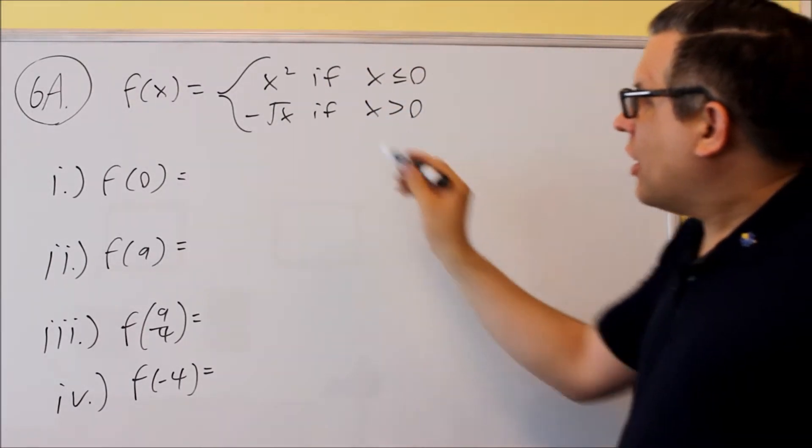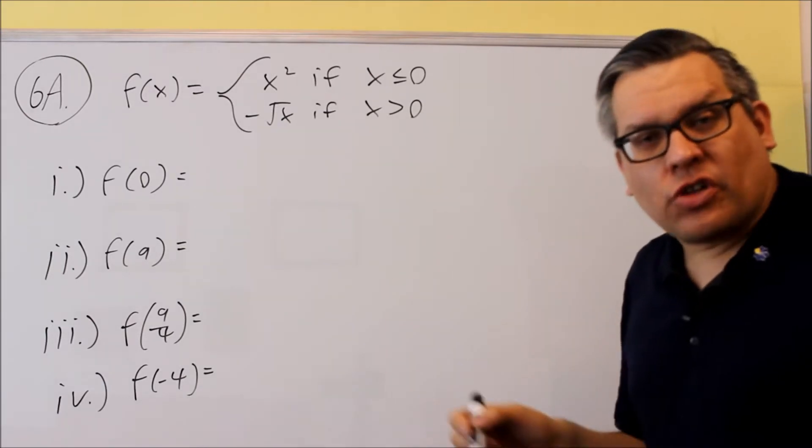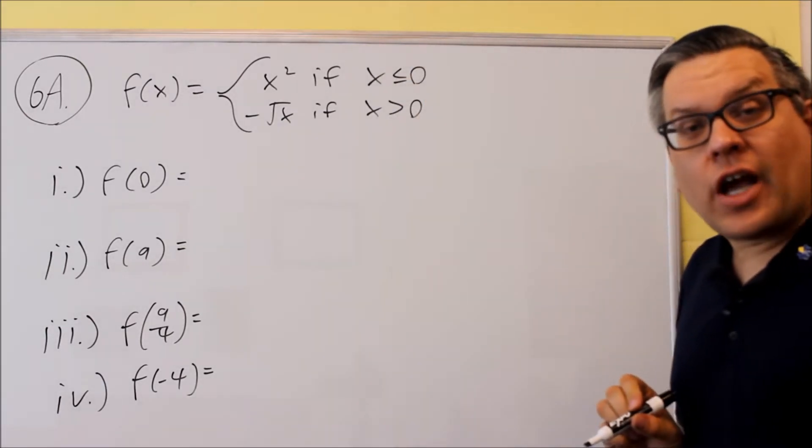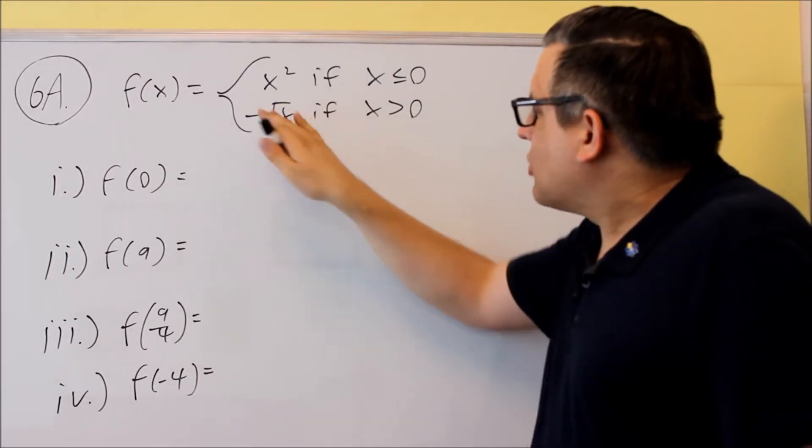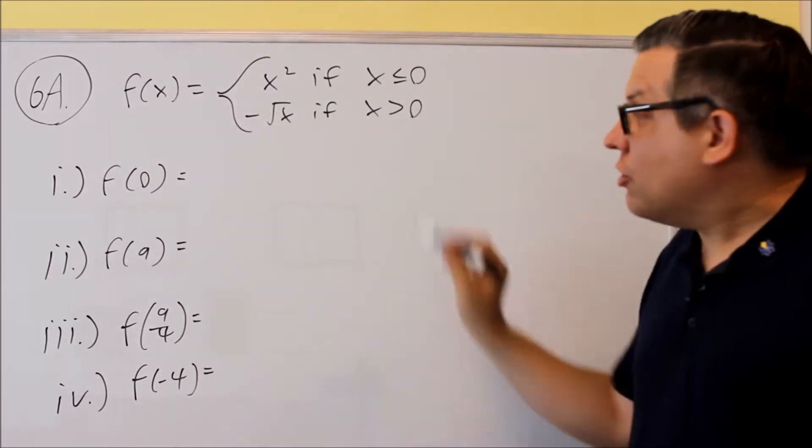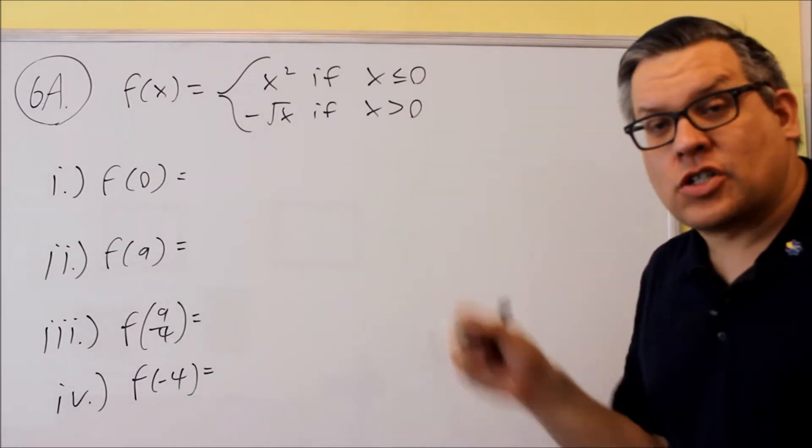This means that x squared, you can only use that function if you're using any x values that are negative or less than zero. And you're going to use square root of x as the only function you use when your x values are positive or greater than zero.